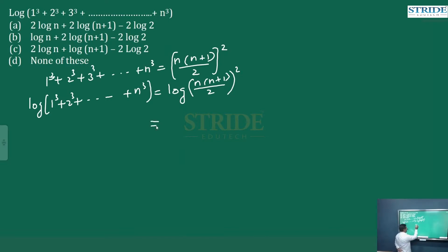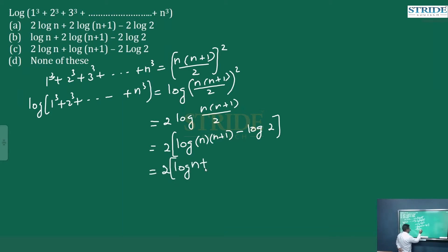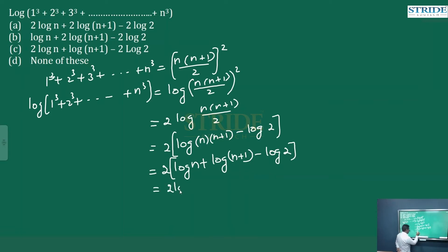By logarithmic rule, we can take 2 into log of n into n plus 1 by 2, which equals 2 into log of n into n plus 1 minus log 2, which equals 2 into log n plus log of n plus 1 minus log 2. This is nothing but 2 log n plus 2 log n plus 1 minus 2 log 2.